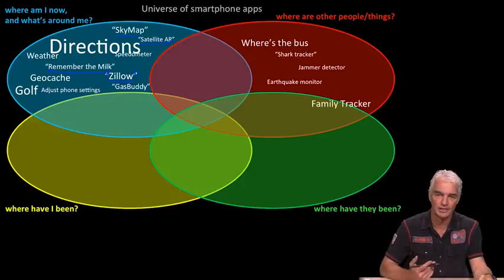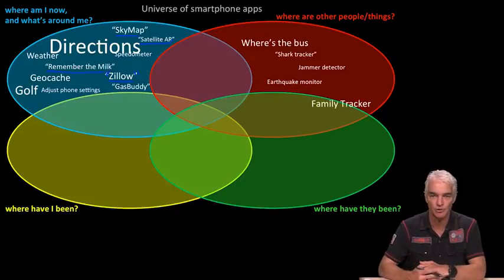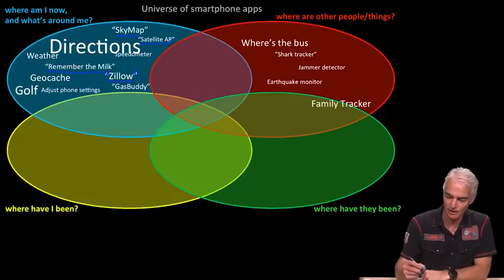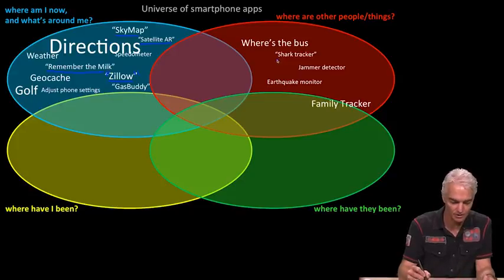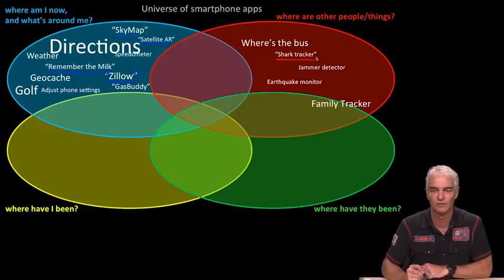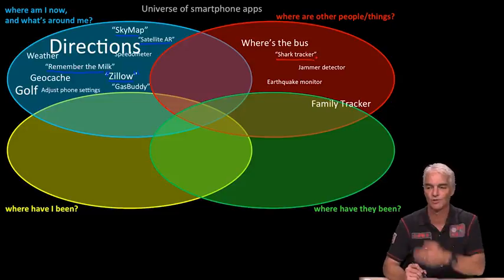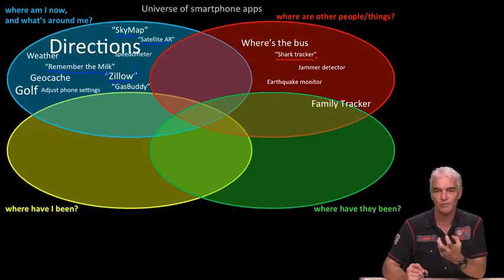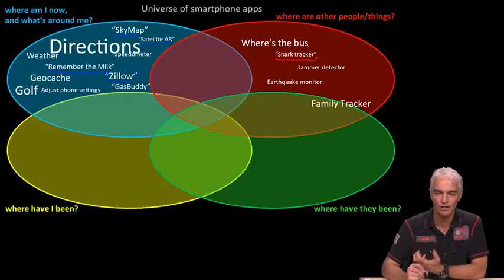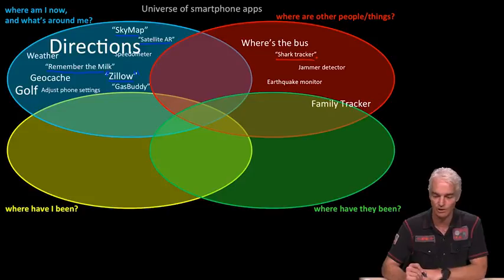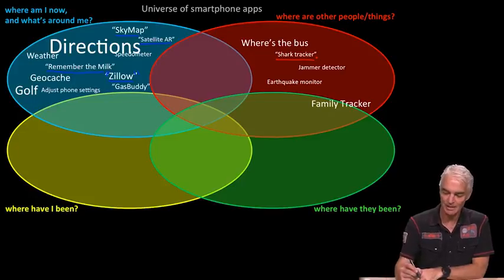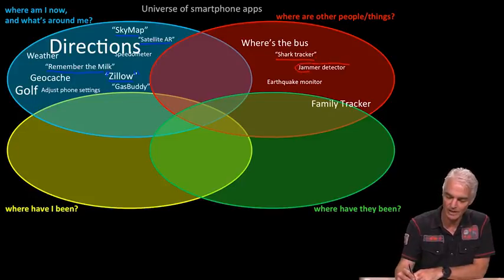What about other people and things? There are apps for public transport available all over the world. A particularly interesting one: scientists put tracking tags on large animals including sharks, and every time a shark comes to the surface, the tag's radio sends a message to a satellite. You can get an app called Shark Tracker that literally shows you the location of several sharks around the world — so if you're worried about sharks at the beach, you can check if any are nearby.